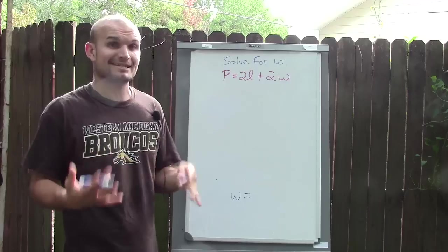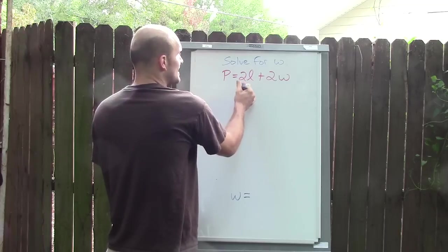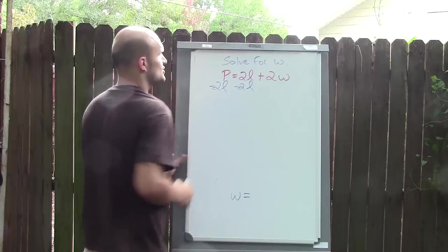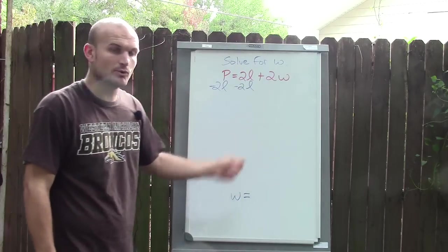Remember, we always undo addition and subtraction first. To undo adding 2L, I'm going to subtract 2L. I have to subtract 2L on both sides using the subtraction property of equality to produce equivalent equations.